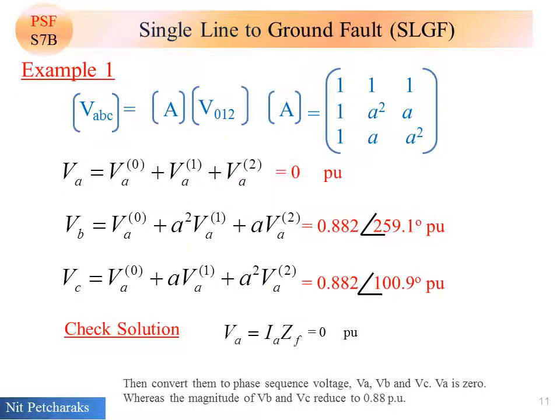Then convert them to phase sequence voltage VA, VB and VC. VA is zero. Whereas the magnitude of VB and VC reduced to 0.88 per unit.